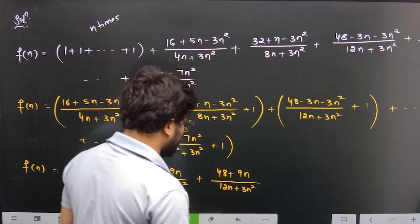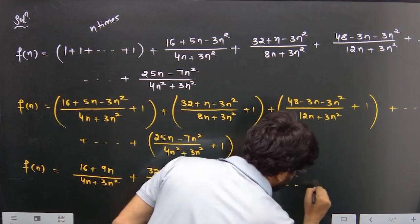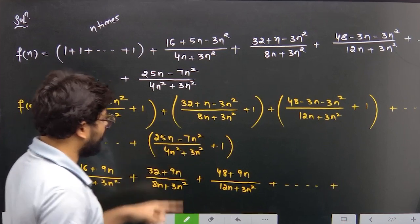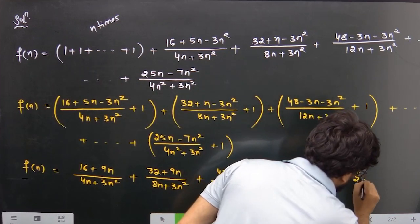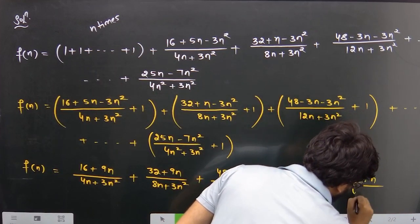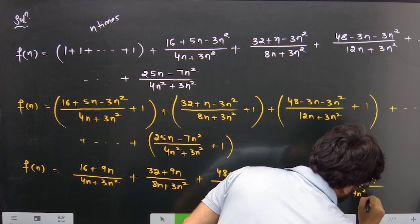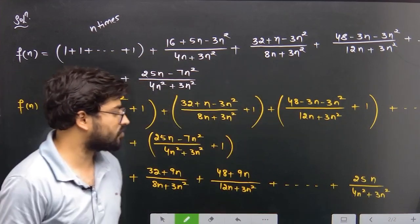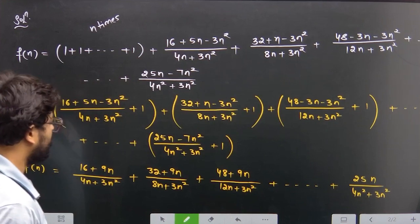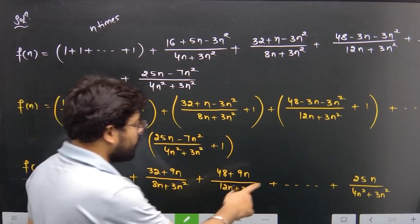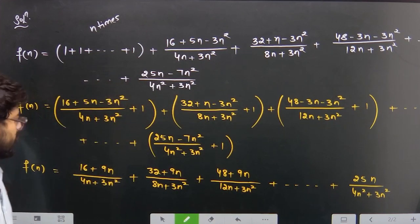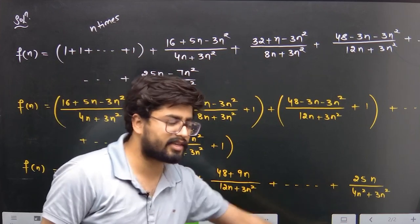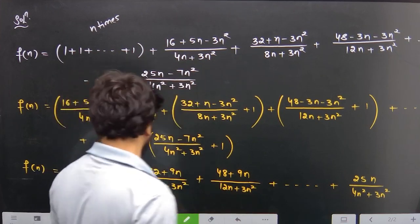Continuing, (48 + 12n - 3n) gives 48 + 9n, and 3n - 3n = 0. The last term simplifies to 25n upon (4n² + 3n²), which is 4·n·n + 3n². So this is our f(n), and now we will write it in sigma notation.